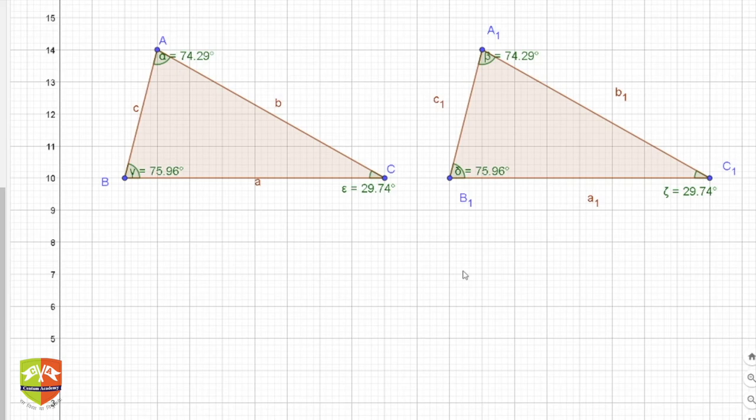This is what we learn about congruency. The criteria are: point one, the angles must be correspondingly equal—A equals A₁, B equals B₁, C equals C₁. Point two, the sides must be correspondingly equal. Alternatively, you can say the ratio of corresponding sides is 1:1. AB/A₁B₁ = 1, BC/B₁C₁ = 1, and CA/C₁A₁ = 1.